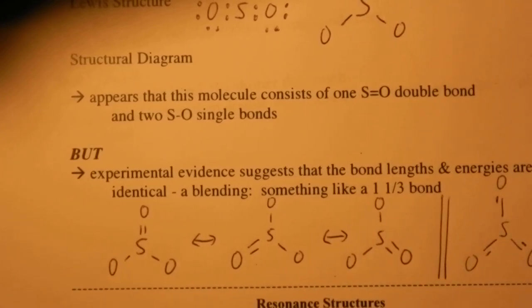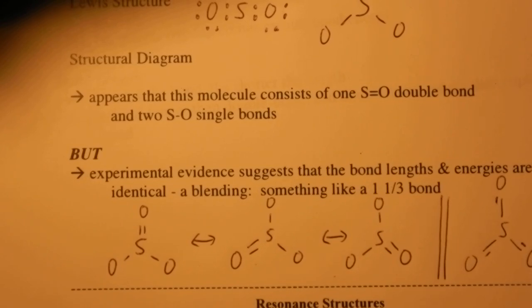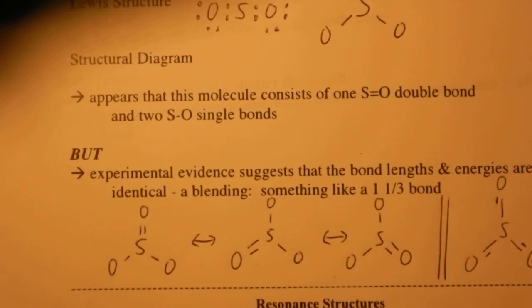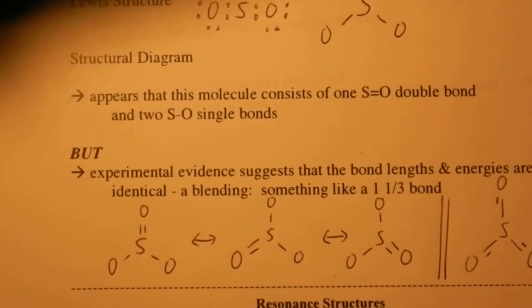And so, it's a stronger bond than a single bond, and a weaker bond than a double bond. That's the first round of resonance structures, and we'll do ozone the next one.